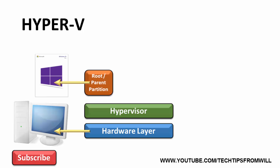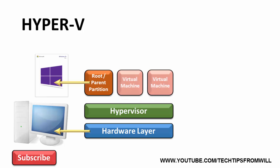In Hyper-V terminology, this is called the root or parent partition. When virtual machines are created in Hyper-V, these virtual machines are created alongside the root or parent partition. This allows both the parent and the virtual machines to access the hardware directly through the hypervisor. Although this setup is neither apparent nor obvious to the user, under the hood, believe it or not, this is what has happened.